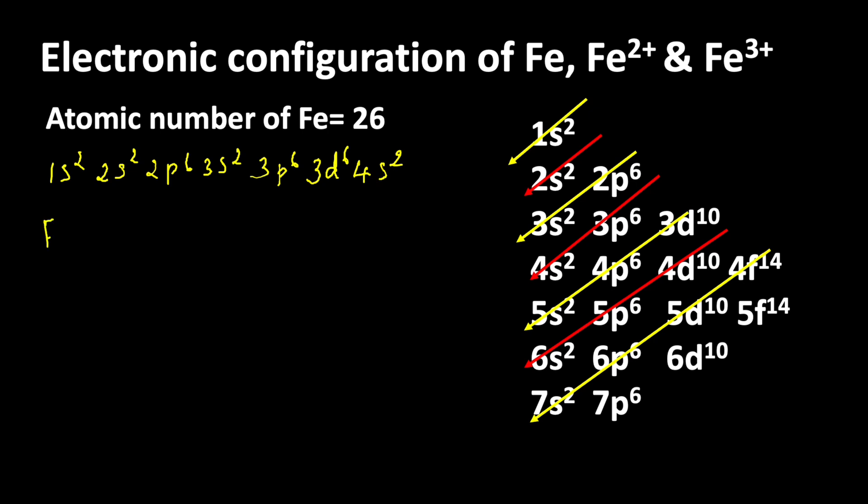Now let us write the electronic configuration of Fe2+. Fe2+ ion is formed when iron loses 2 electrons. So the number of electrons available in Fe2+ is 24 electrons.